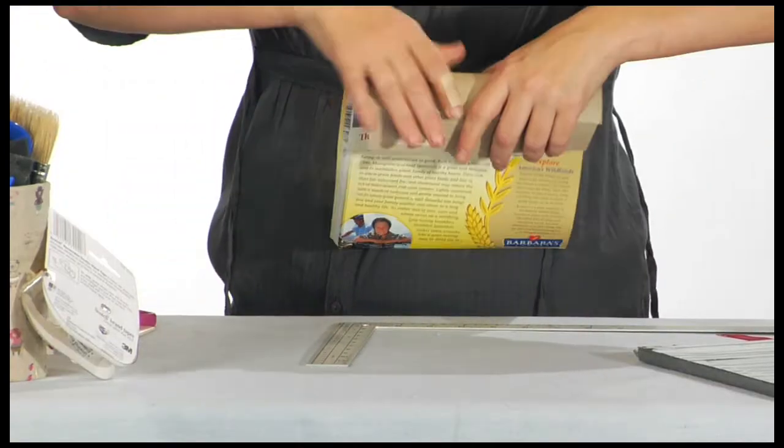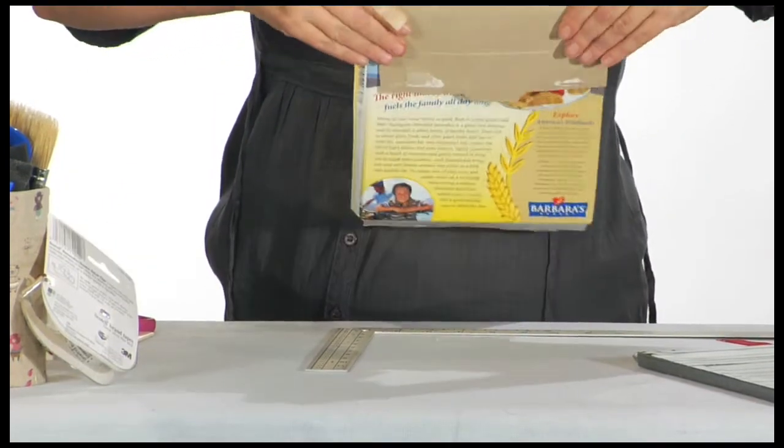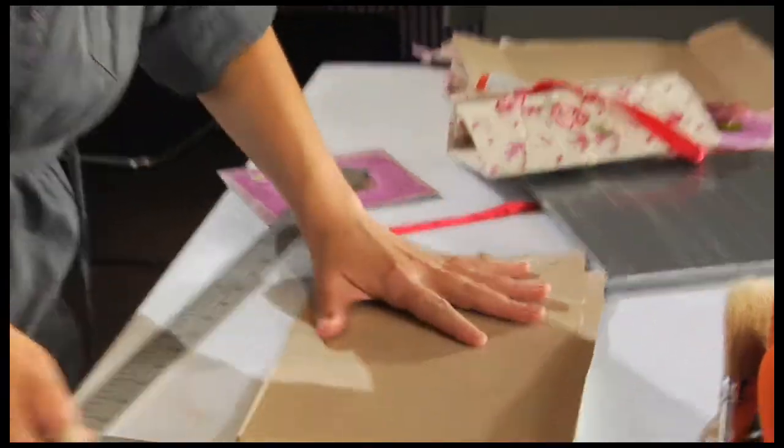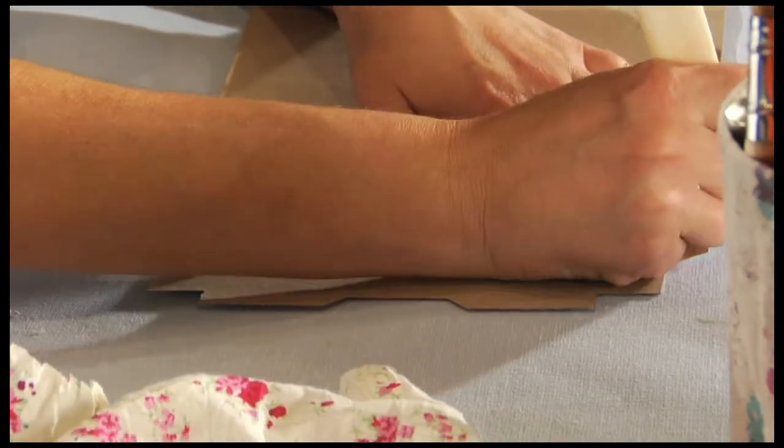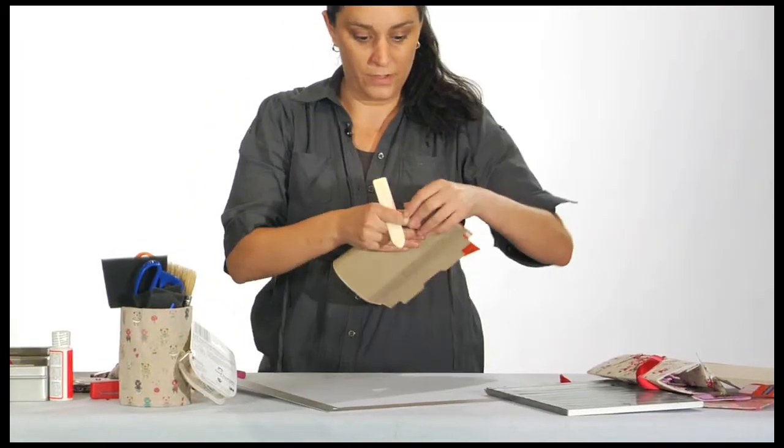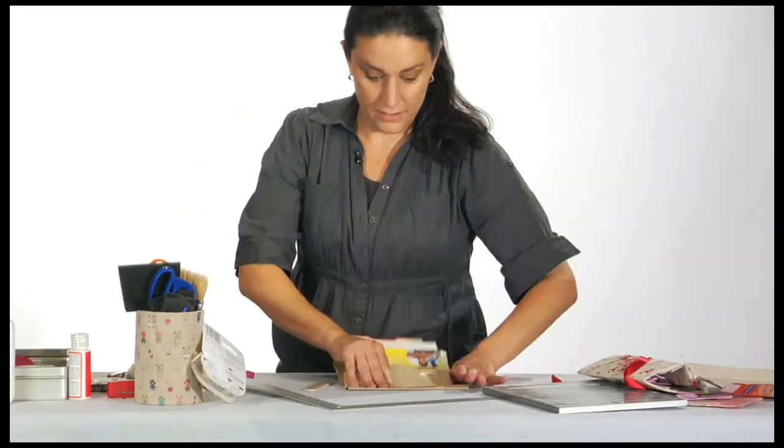And then what I have is a nice fold. I'm going to do the same thing on the other side. And just drag it down. Now what I have is a folded piece and two flaps.